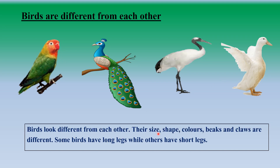Their size, shape, colors, beaks, and claws are different. Some birds have long legs while others have short legs. Is it clear now, children?